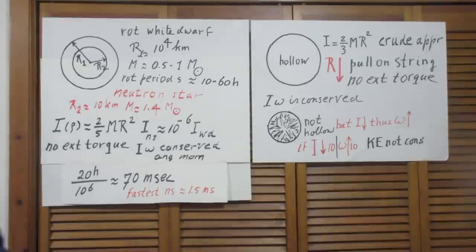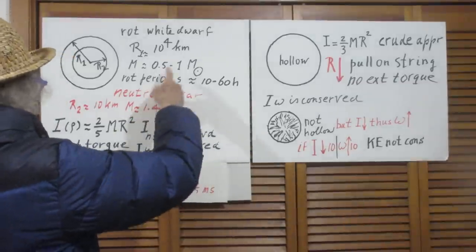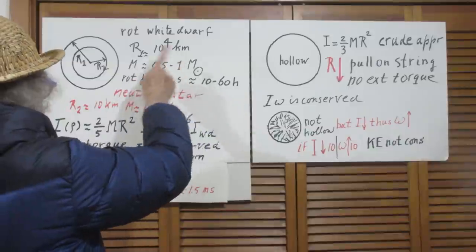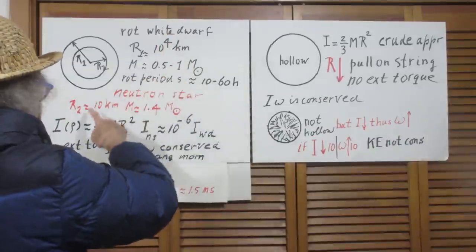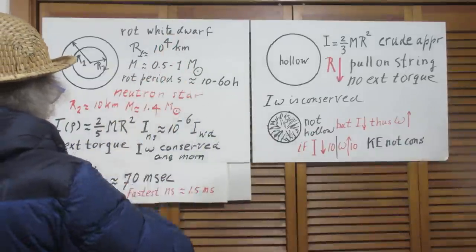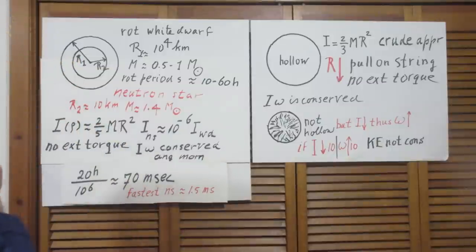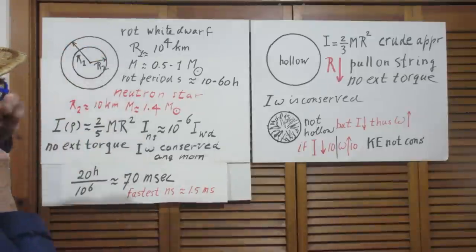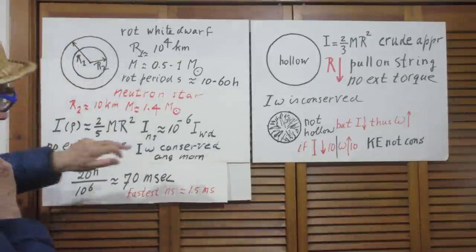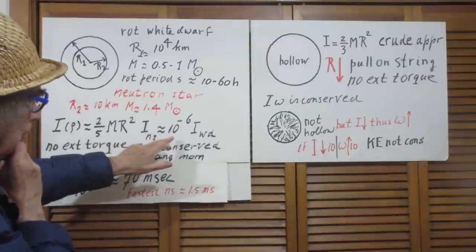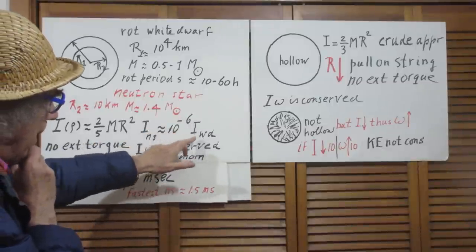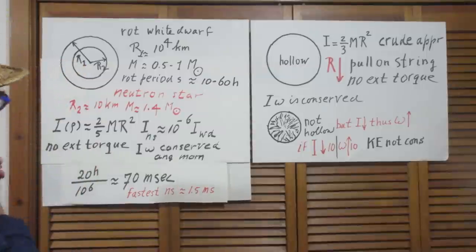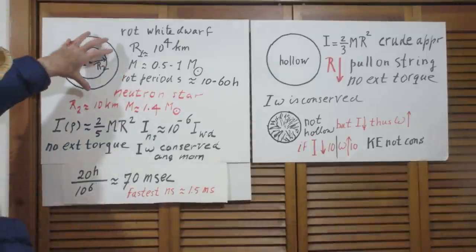Now, if for simplicity we say, well, let M white dwarf be one solar mass and M neutron star also one solar mass, then you can forget about the M. So as the collapse occurs, the moment of inertia of the neutron star is 10⁻⁶ times the moment of inertia of the white dwarf.